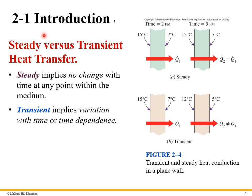One thing we need to distinguish is the difference between steady-state and transient heat transfer. Here we show a wall where at 2 p.m. it's 15°C on one side and 70°C on the other. At 5 p.m. the temperatures haven't changed — it's still the same temperature difference — so we have exactly the same heat transfer through the wall. In this case, heat transfer is not a function of time, so we call that steady state.